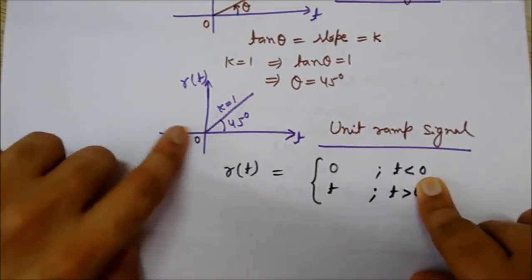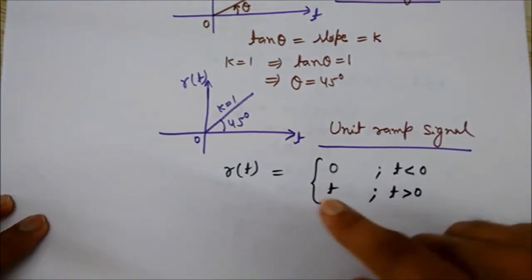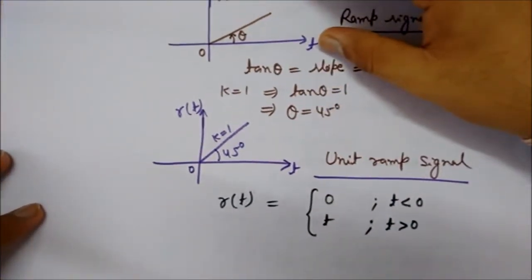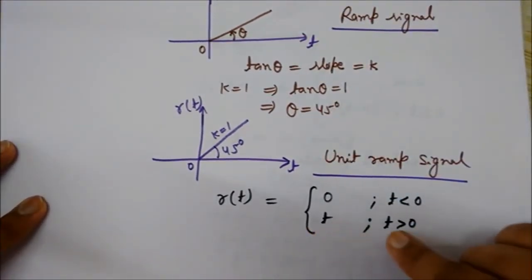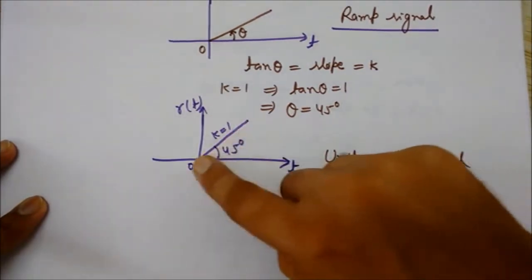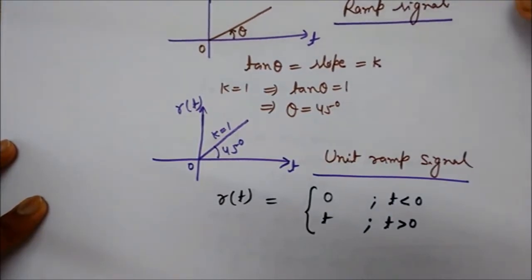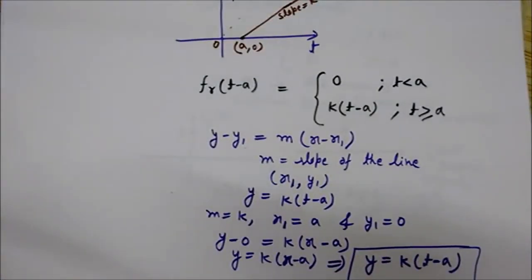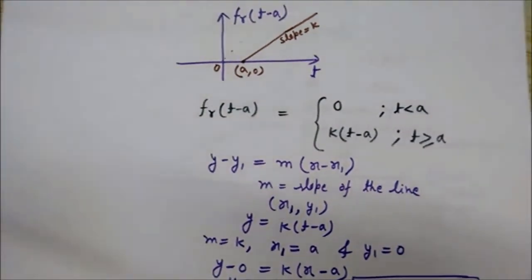You can see it has a value of 0 for negative values of t. Its value is t for t greater than or equal to 0, since in the general ramp it was kt, and here k equals 1. So for t greater than 0 it is a line y equals t. That was the unit ramp signal.